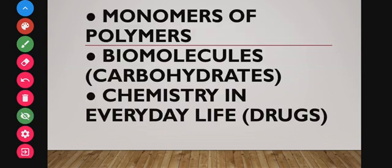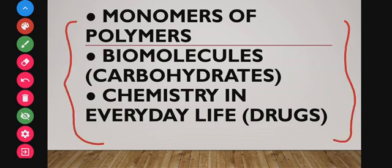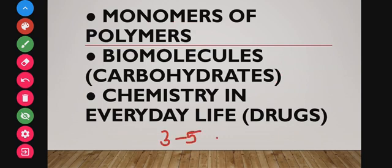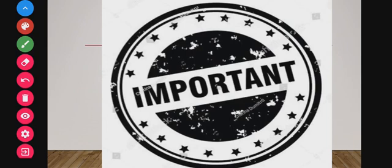Some chapters that students tend to read only once — but which I suggest giving importance to — include polymers, biomolecules, and chemistry in everyday life. By learning these three chapters you can get at least three to five questions, which equals around 20 marks. In polymers, learn the monomers from which various polymers are formed. In biomolecules, carbohydrates are important — especially glucose. In chemistry in everyday life, learn about drugs such as tranquilizers and antibiotics.